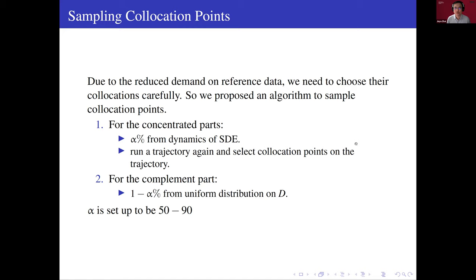So we provide the following strategy to sample data. So we just need to run a trajectory of this SDE and then choose some collocation points or data from this trajectory. And then it is highly possible that these points are from high density parts. And then we use uniform distribution to sample the rest of them. And then they are distributed almost everywhere in this region. And they will be representative. And this rate alpha is usually set to be between 50 and 90 because we want more points from the high density regions.